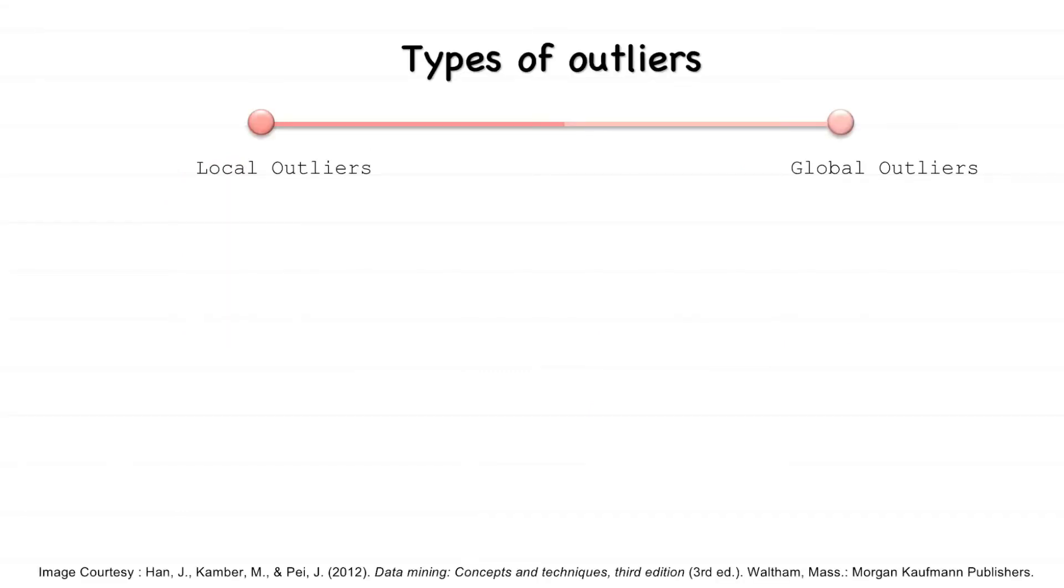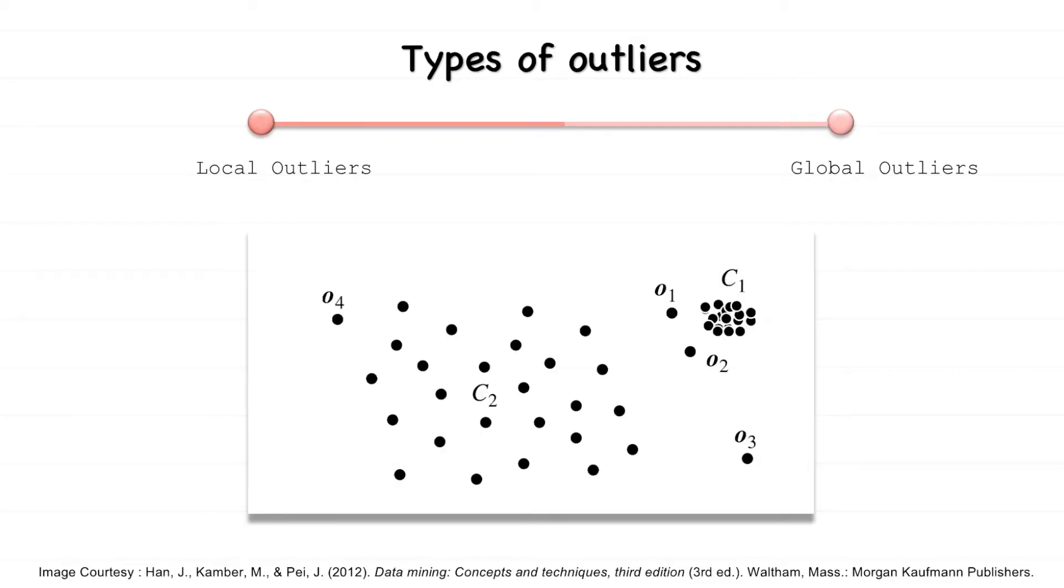Outliers are of many types. To simplify this, let's assume a scale with local outliers at one extreme and global outliers at the other extreme. Global outliers are the points which are very different from the entire dataset, example point O3.